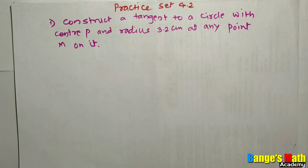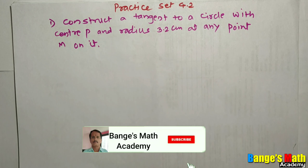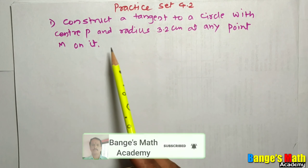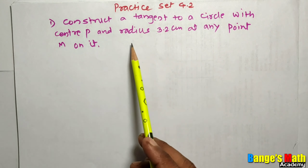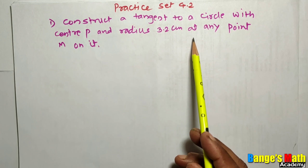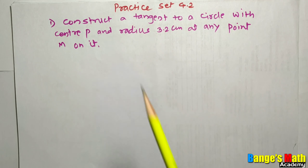Geometric Construction Practice Set 4.2. See the first example: construct a tangent to a circle with center P and radius 3.2 cm at any point M on it.